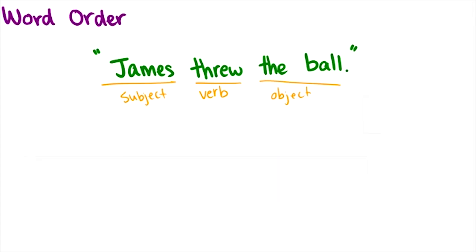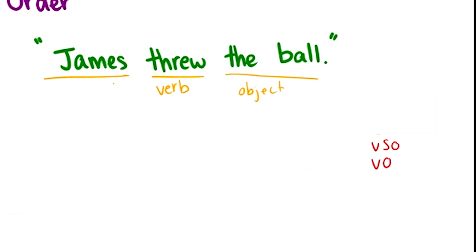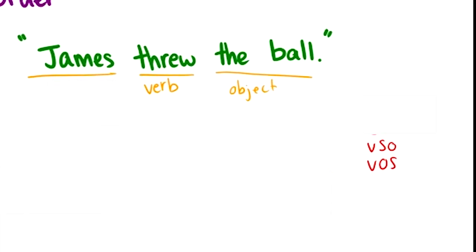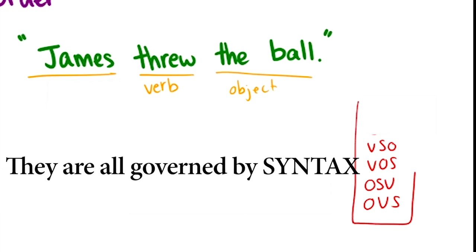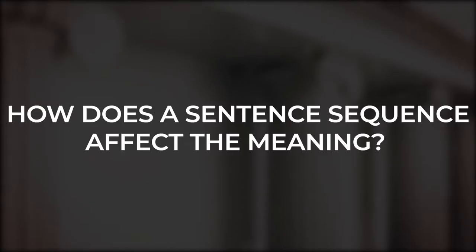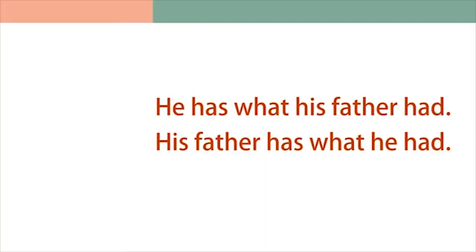However, there are some exceptions whereby the subject is not placed first in the sentence. Such sentences are formed in orders such as V-S-O, V-O-S, O-V-S, or even O-S-V. All these sequences are governed by syntax.